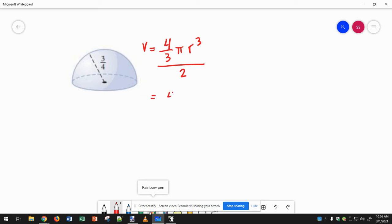This 2 and this 3 are going to get multiplied together, and then I can reduce, and I can come up with a kind of a shortcut formula for a hemisphere.